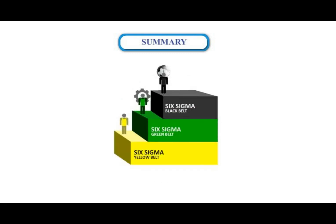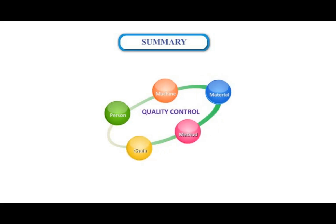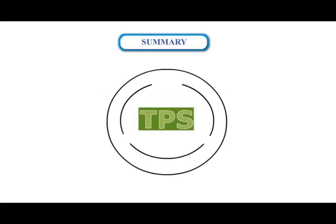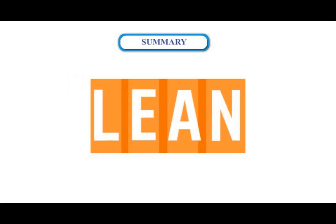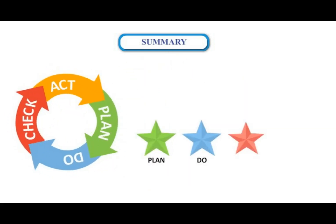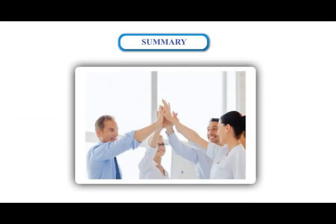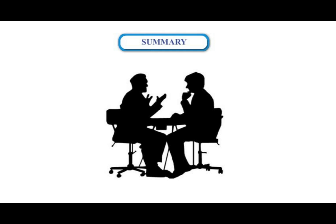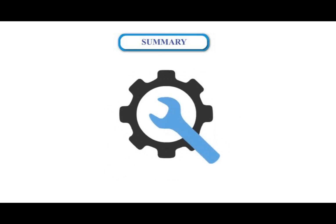Lean Six Sigma at many organizations simply means a measure of quality that strives for near perfection. TPS is famous, but it's just a small part of the total Toyota Production System, which includes production planning and design. In the context of a truly Lean environment, Kaizen is a pervasive philosophy that affects the way all employees look at their work environment. Lean Six Sigma brought a more structured problem-solving approach, the mentoring and training focus of the belt structure, and a broader toolkit of tools.